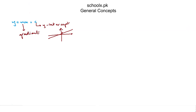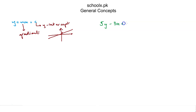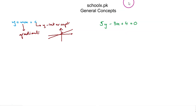Let's do an example. If we're given the equation 5y minus 3x plus 4 equals 0, and we're asked to find the gradient of this line and also the y-intercept, we'll have to convert this equation into the general form y equals mx plus c.